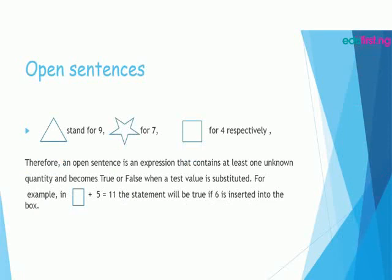Triangle stands for 9, star stands for 5, rectangle stands for 4 respectively. Therefore, an open sentence is an expression that contains at least one unknown quantity and becomes true or false when tested. For example, rectangle plus 5 equal to 11 will be true if 6 is inserted in the box.